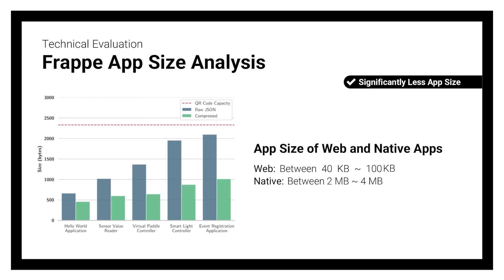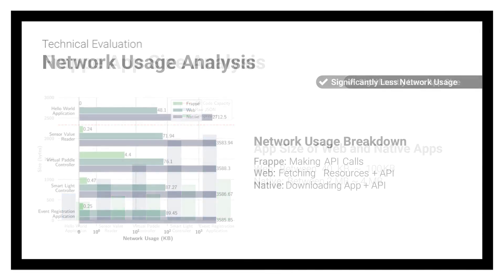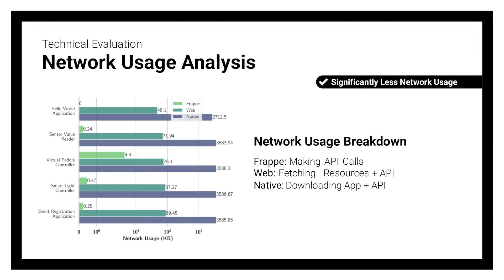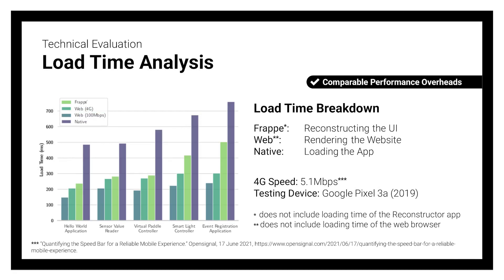Web and native apps, on the other hand, weigh significantly higher because of various framework overheads. Apps created using Frappe consume significantly less network resources compared to web and native apps when comparing first-time or ephemeral use cases, since Frappe apps require network connection only for triggering app functionality. Lastly, apps created using Frappe demonstrate comparable load times to web apps accessed using high-speed internet and are significantly faster when compared to the load times of native apps.